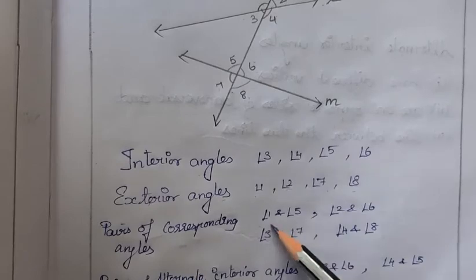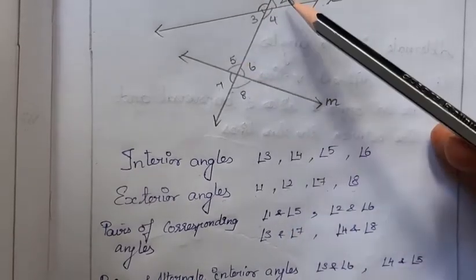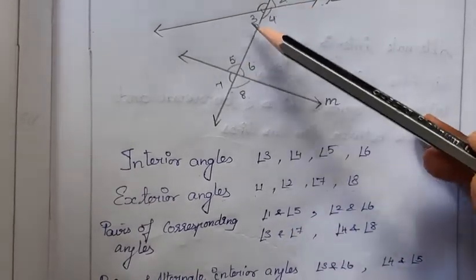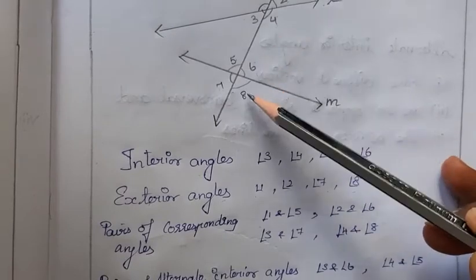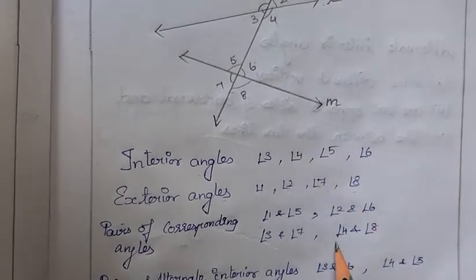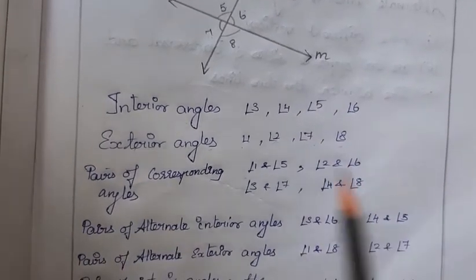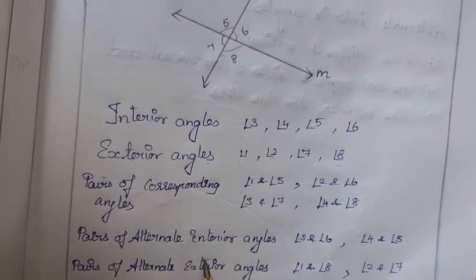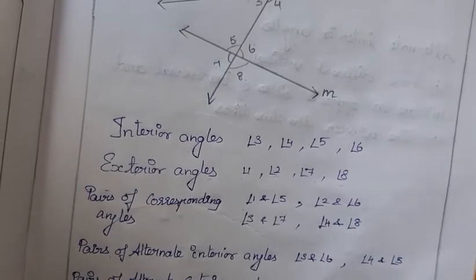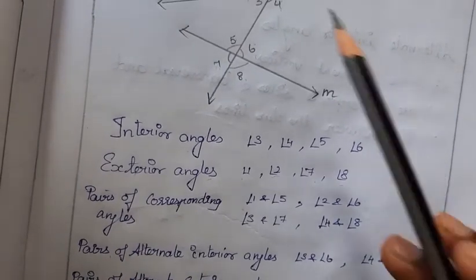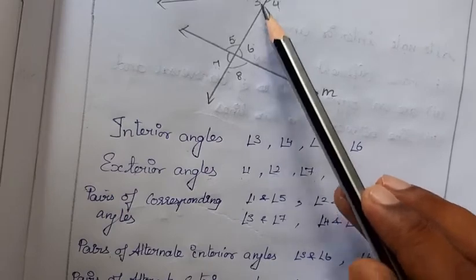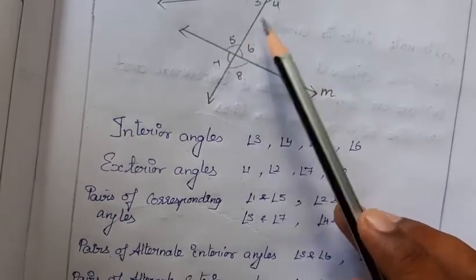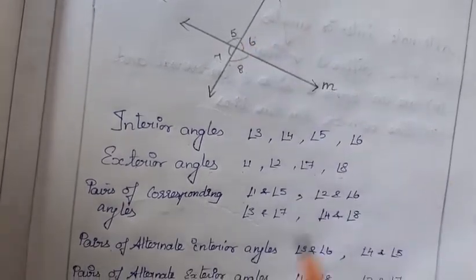Pairs of corresponding angles: 1 and 5, 2 and 6, 3 and 7, 4 and 8. Pairs of alternate interior angles: 3 and 6 (alternate and interior), and 4 and 5 (alternate and interior).